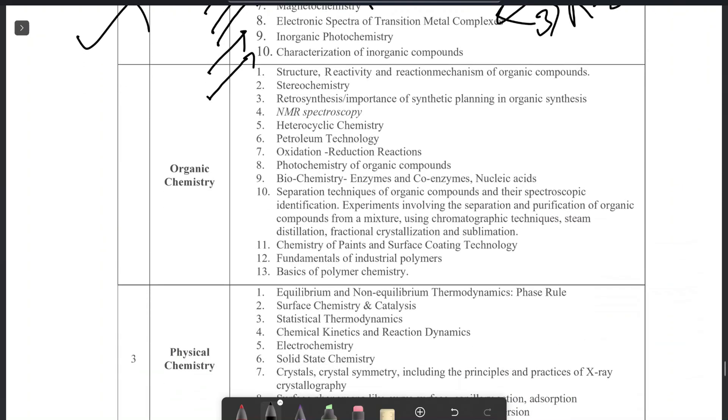Next is your organic chemistry. Organic chemistry structure, there is first one is GOC, general organic chemistry, stereochemistry, retrosynthesis, NMR, heterocyclic chemistry, petroleum technology, oxidation reduction, photochemistry, biochemistry, separation techniques. There is a practical organic chemistry portion. Chemistry of paints, fundamentals of industrial polymers, basic polymer.